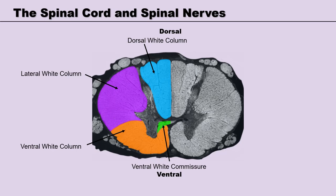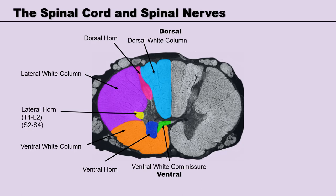Let's have a look at the grey matter. The dorsal horn receives sensory neurons from the peripheral nervous system. The ventral horn sends motor information back to the peripheral nervous system. The lateral horn is a little different — lateral horns are only present between T1 and L2, and S2 to S4. The lateral horns send motor neurons into the sympathetic chain for sympathetic innervation of the organs of the thorax, abdomen, and pelvis.